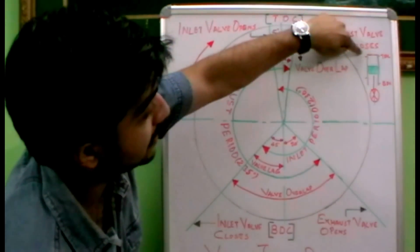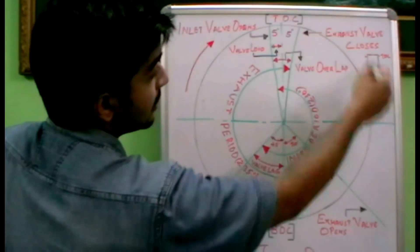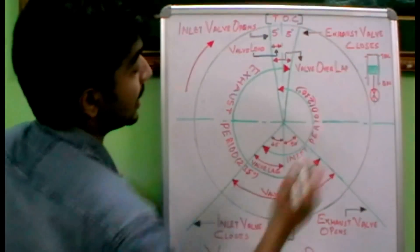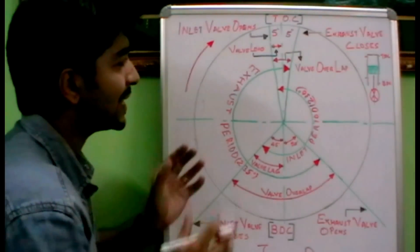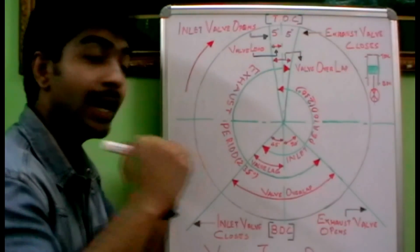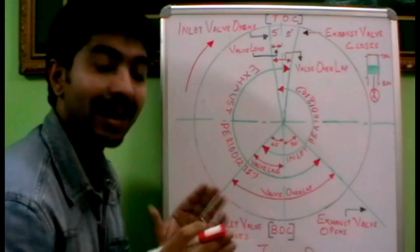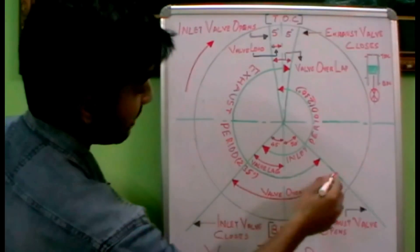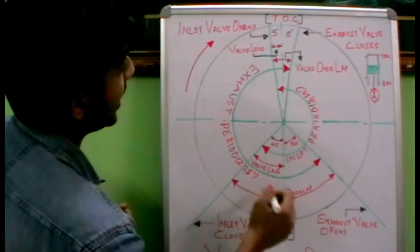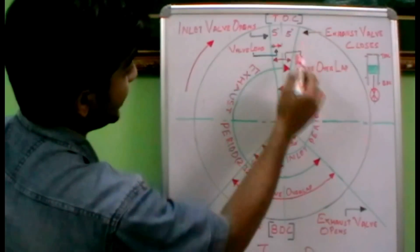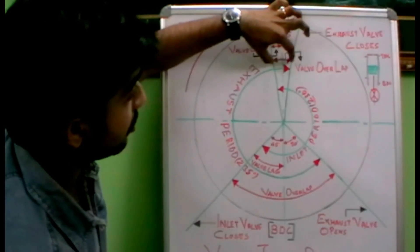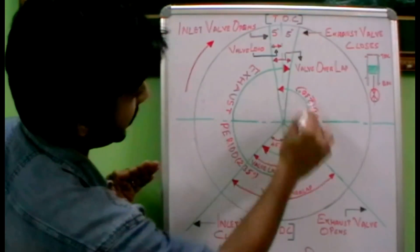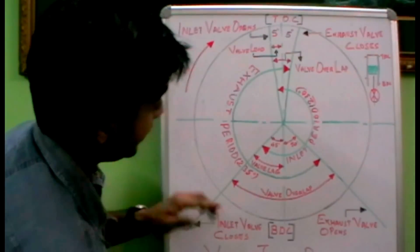Here you can see the piston movement — this is the top dead center and the bottom dead center. The rotation of the crankshaft results in the movement of the piston, and these degrees represent the crankshaft rotation at which it reaches top dead center and bottom dead center. At some point both the inlet valve and exhaust valve will be in the open position, and that is called the valve overlap period. We have a valve overlap of about 95 degrees at this section, and near BDC and TDC we have 10 degrees of valve overlap. During this period both inlet and exhaust valves are open. The inlet period is about 230 degrees of crankshaft rotation and the exhaust period is about 235 degrees.